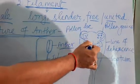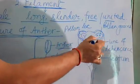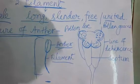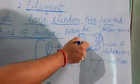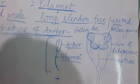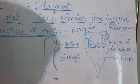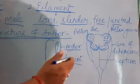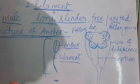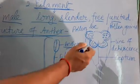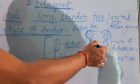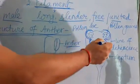Now we look at the detailed structure of a stamen. Here, look at this figure. There is one pollen sac here and one pollen sac here — so there are two pollen sacs in total. Each pollen sac has one microsporangium, so there are four microsporangia present altogether.